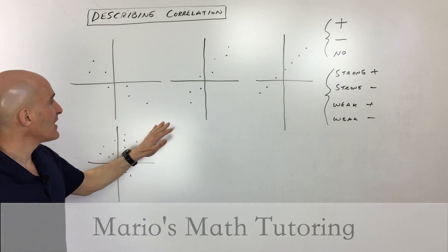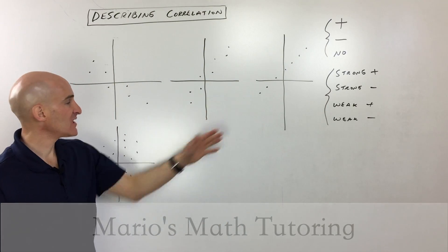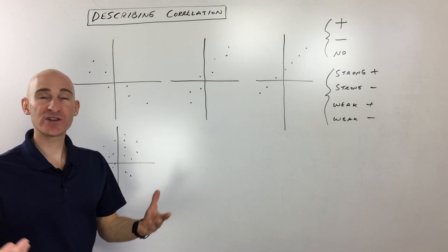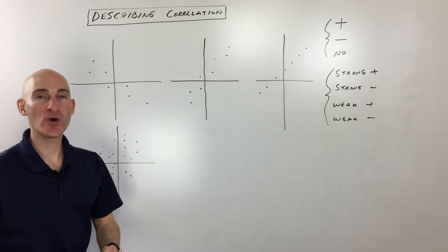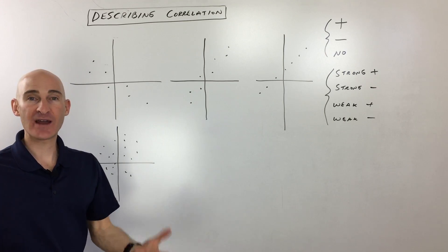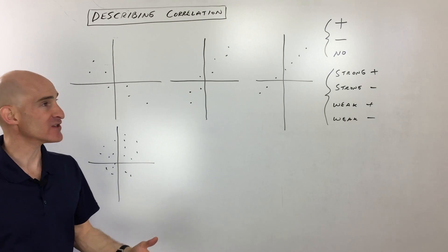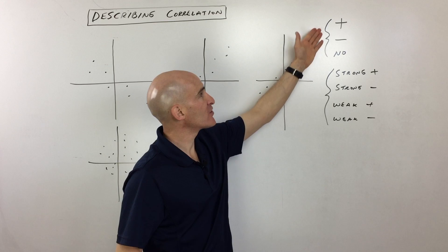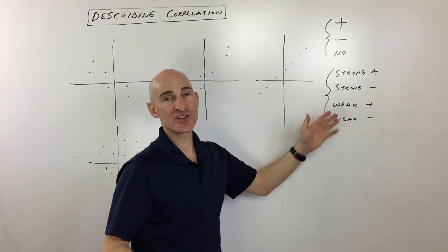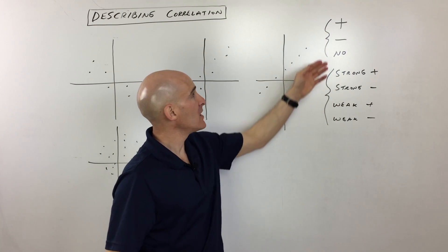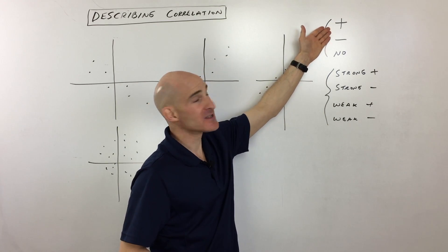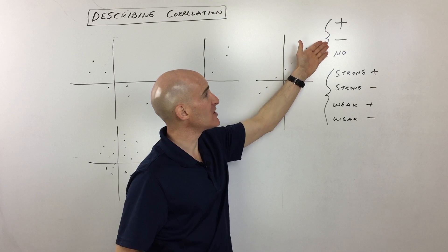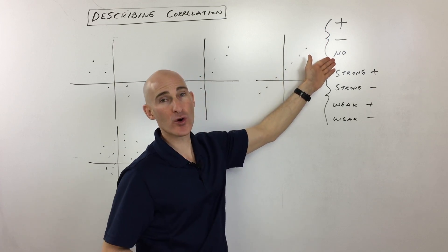Let's look at a scatter plot and try to understand what exactly correlation is, what does it refer to, and how do we find out what it is. Here's some terminology that applies to correlation: it could be a positive correlation, it could be a negative correlation, or it could be no correlation.